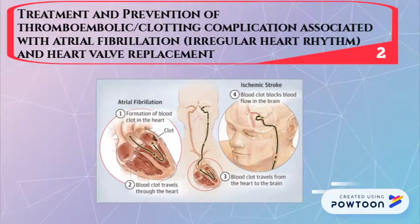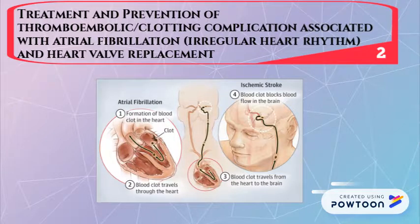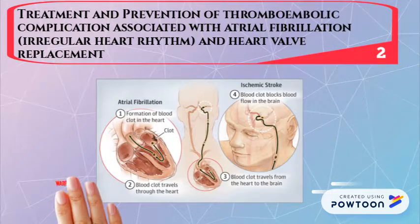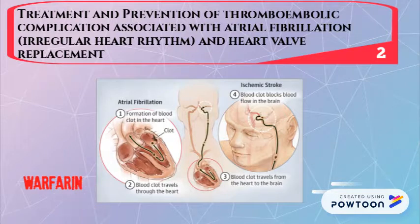Stroke can occur in patients with atrial fibrillation. In atrial fibrillation patients, the heart rhythm is irregular, which reduces the efficiency of the heart to pump out blood. This causes blood to pool in the heart and eventually forms a clot that travels to the brain and blocks blood flow towards the brain, leading to stroke. By giving warfarin to these patients, it can prevent blood clot formation at the initial stage before it develops further.